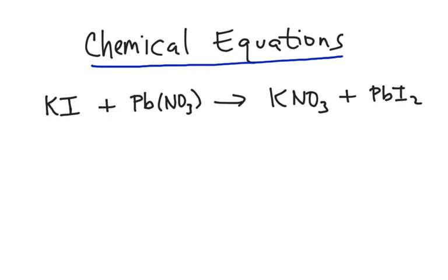If you look at the example that's on the screen, we've got an example of a symbolic representation of a chemical reaction that you've probably seen before where we have potassium iodide reacting with lead two nitrate to form two products, potassium nitrate and lead two iodide.